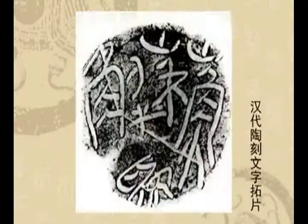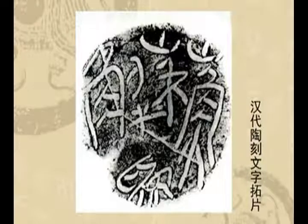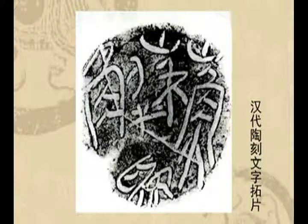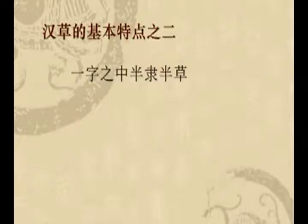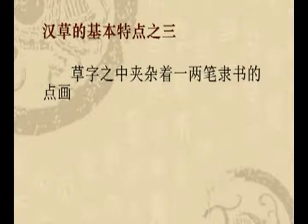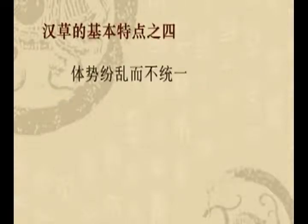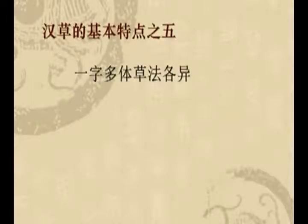第四个类别：汉草。我说的汉草不是说章草，而是章草名称出现之前的早期草书，或者说章草成熟之后仍然存在的汉草的一部分。从流传至今的汉代简牍草书作品来看，这是一种草隶，也就是汉草。汉草的基本特点：第一点，隶书草书混杂于一篇章；第二点，一字之中半隶半草；第三个，草字当中夹着一两笔隶书的笔画；第四点，体式纷乱而不统一；第五点，一字多体，草法各异。